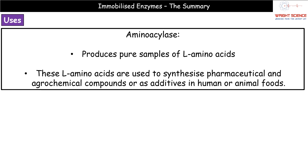The next example is aminoacylase, which produces pure samples of L-amino acids. These are really useful when it comes to synthesizing both pharmaceutical and agrochemical compounds — pharmaceutical meaning different medicines, and agrochemical meaning agricultural applications. We also find these L-amino acids as additives in foods for both animals and humans, so aminoacylase can produce them for a wide range of uses.